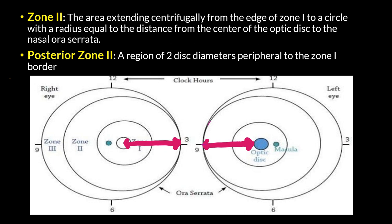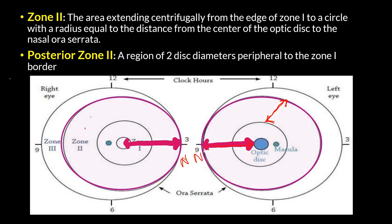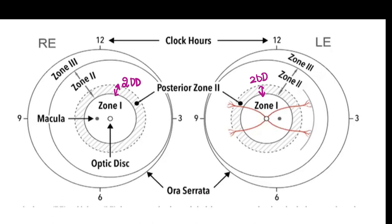Zone 2 is the area extending from the edge of zone 1 to a circle whose radius equals the distance from the center of the optic disc to the nasal ora serrata. The large red arrows indicate this radius drawn from the optic disc to the nasal ora serrata. Zone 2 is further subdivided into zone 2 anterior and zone 2 posterior. The more peripheral part is called anterior zone 2, and the more central part toward zone 1 is called posterior zone 2.